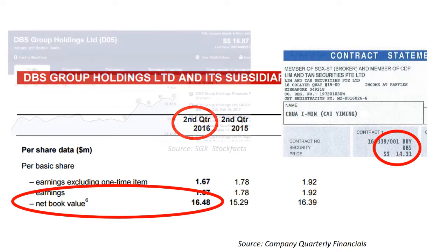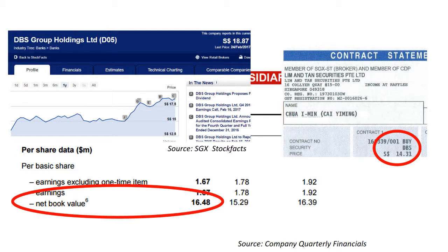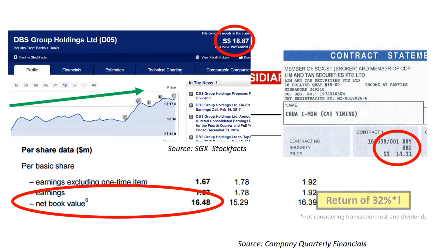True enough, given time, when price is actually deemed as cheap, they actually move up. As in this case, I made a profit of 32%. To use price to book value to value companies,